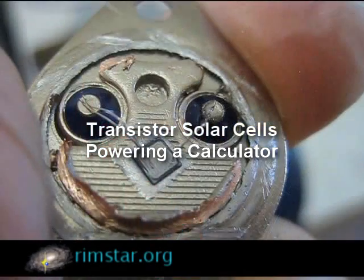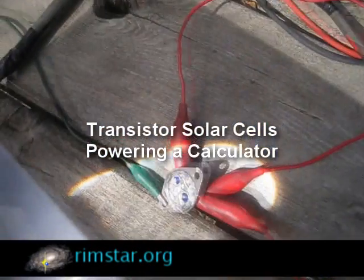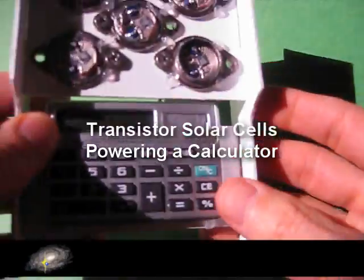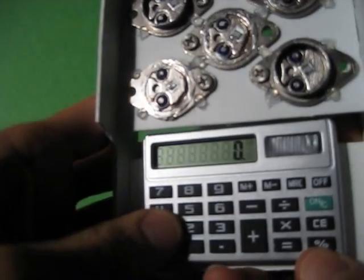Hi gang! In my other video I showed how to make a solar cell using a single power transistor. Now I've combined five of them together into sort of a solar panel to power a calculator. Here are the details. Enjoy!